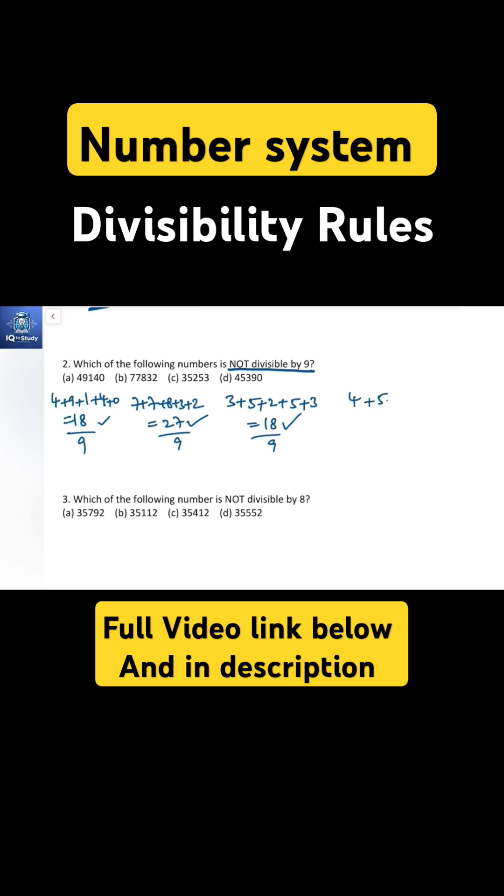is 4+5+3+9, which equals 21. 21 is not divisible by 9, so option D is correct.